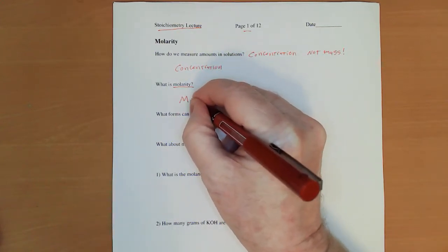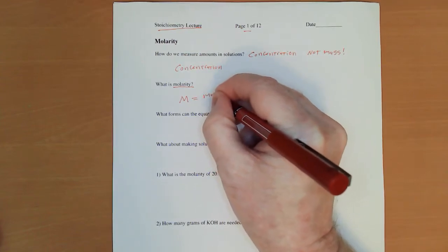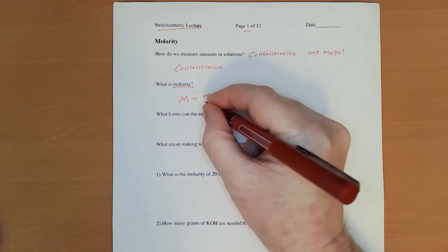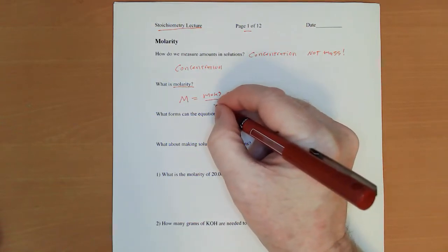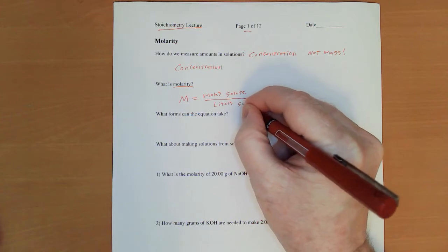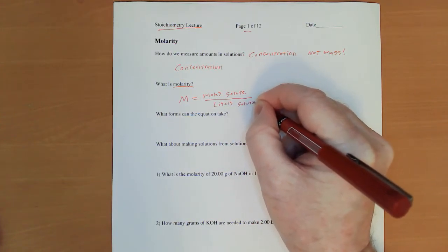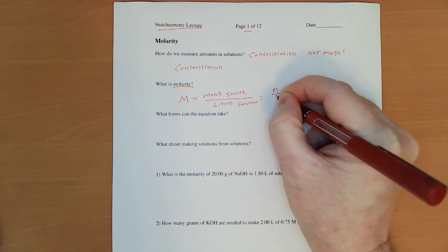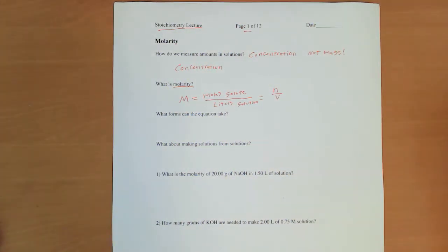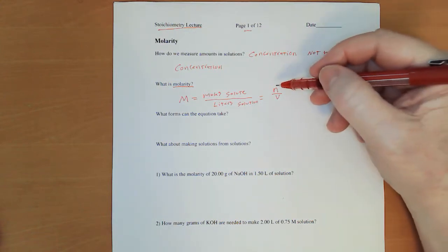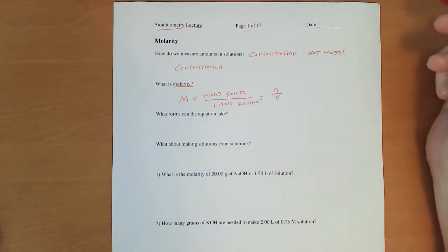is equal to moles of solute divided by liters of solution. So we abbreviate that with n over v. And we are very strictly limited to moles divided by liters. We can't change it to milliliters or centiliters or anything like that.